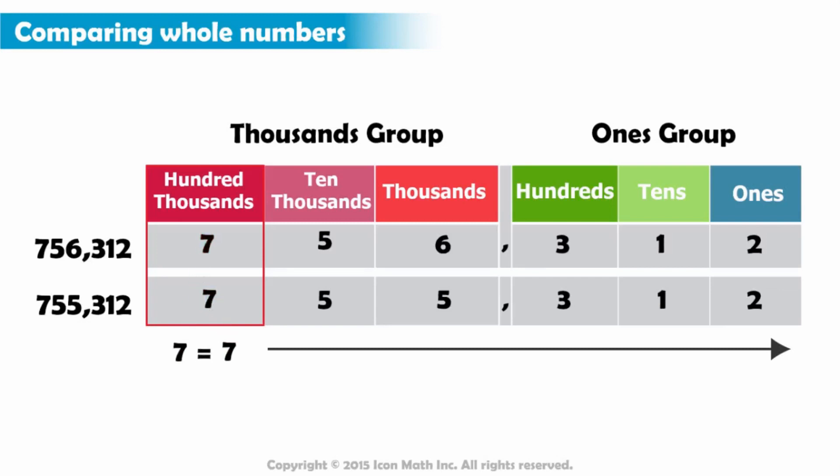Since they are equal, we move on to the next highest place value. Again, we have five in the ten thousands place in both numbers.